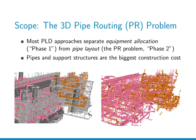The whole plant layout design problem in the literature is typically separated into two phases. The first phase is equipment allocation and the second phase is pipe layout. We typically accept the equipment layout from phase one and then perform pipe routing — that is the phase two we are looking at.